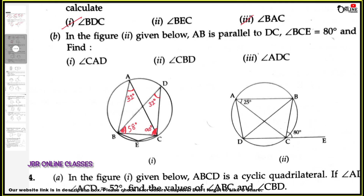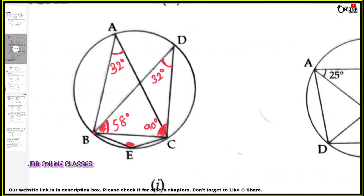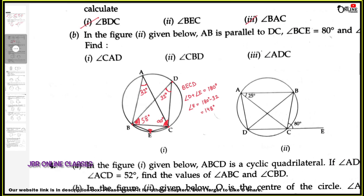Now find angle BEC. Looking carefully, B, E, C, D — all four vertices lie on the circumference, so B, E, C, D is a cyclic quadrilateral. The opposite angles are angle D and angle E, and their addition equals 180 degrees. Angle D is 32 degrees, so angle BEC equals 180 minus 32, which is 148 degrees. So 148 degrees is the second answer.